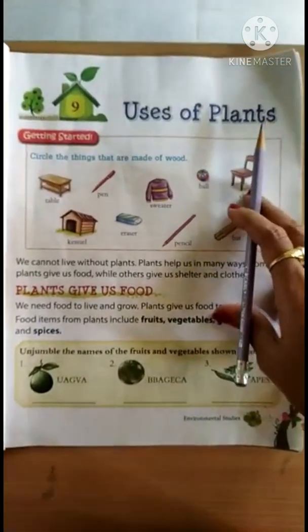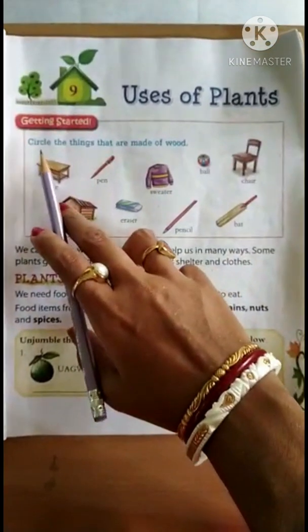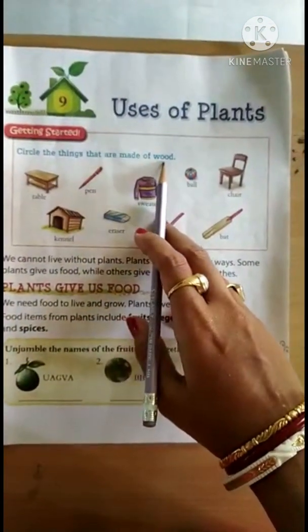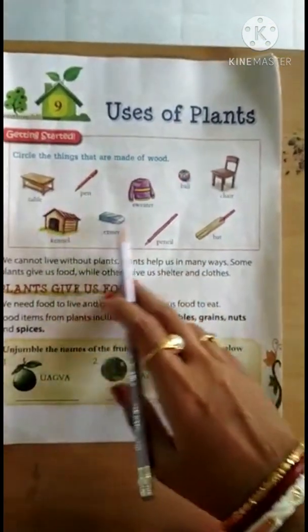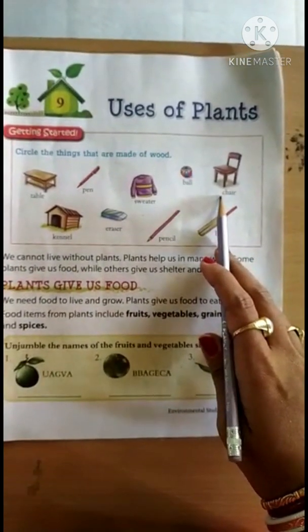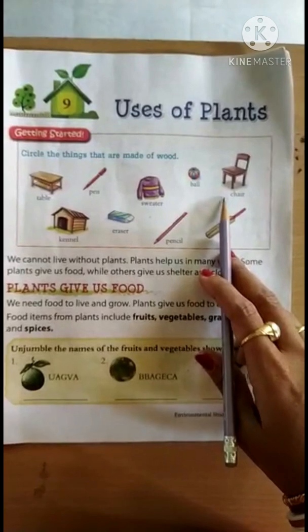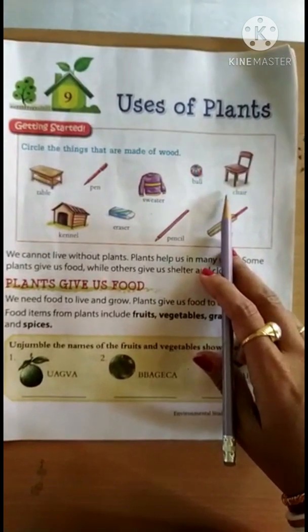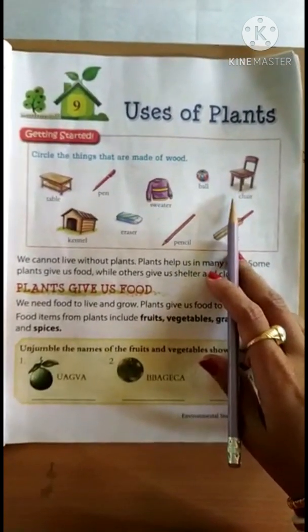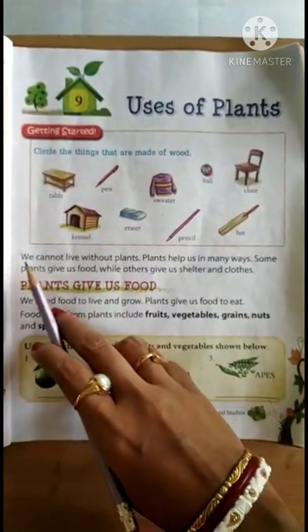Here you can see an activity: circle the things that are made of wood. A few things are given and you have to circle the ones which are made of wood. You can easily do it - you know what wood is - so you will do it yourself. Let's start the chapter.